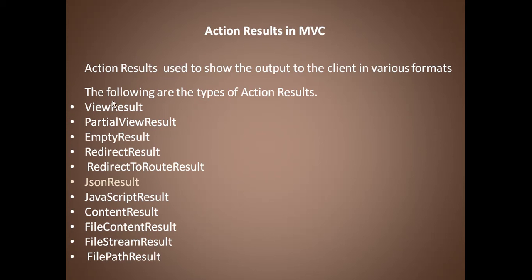The main types include: view result, partial view result, empty result, redirect result, redirect to route result, JSON result, JavaScript result, content result, file content result, file stream result, and file path result. Action result is nothing but the output format shown to the client — to the browser or to the user. In this video tutorial we will learn about the JSON result type.